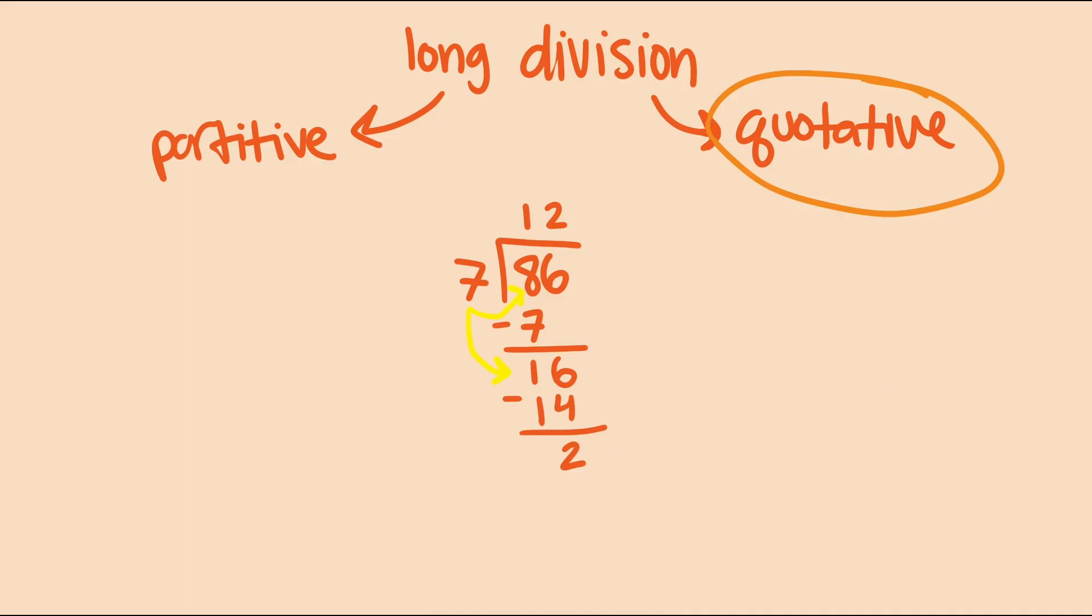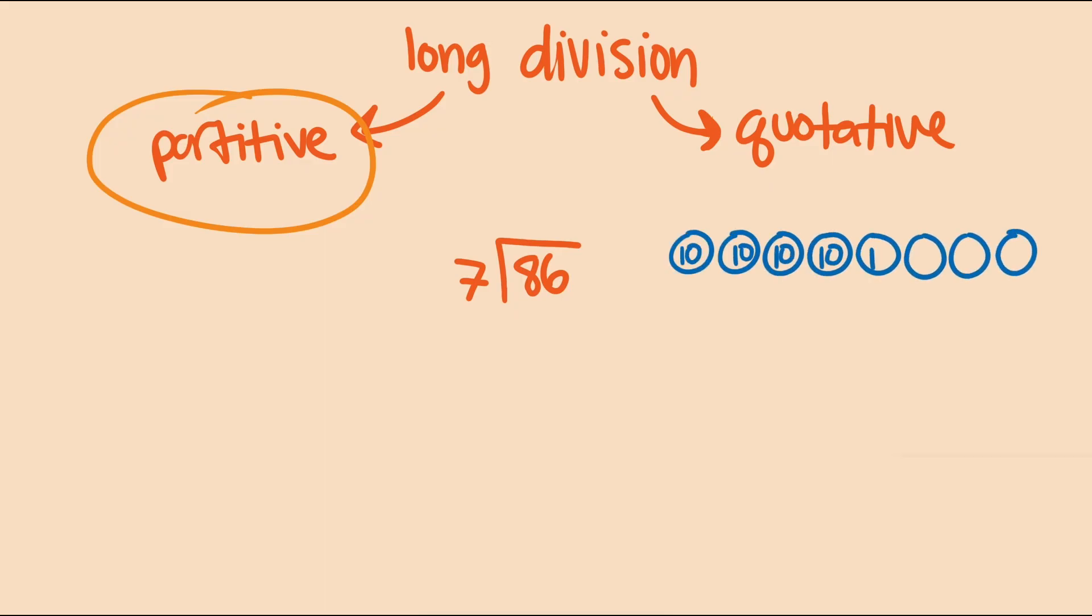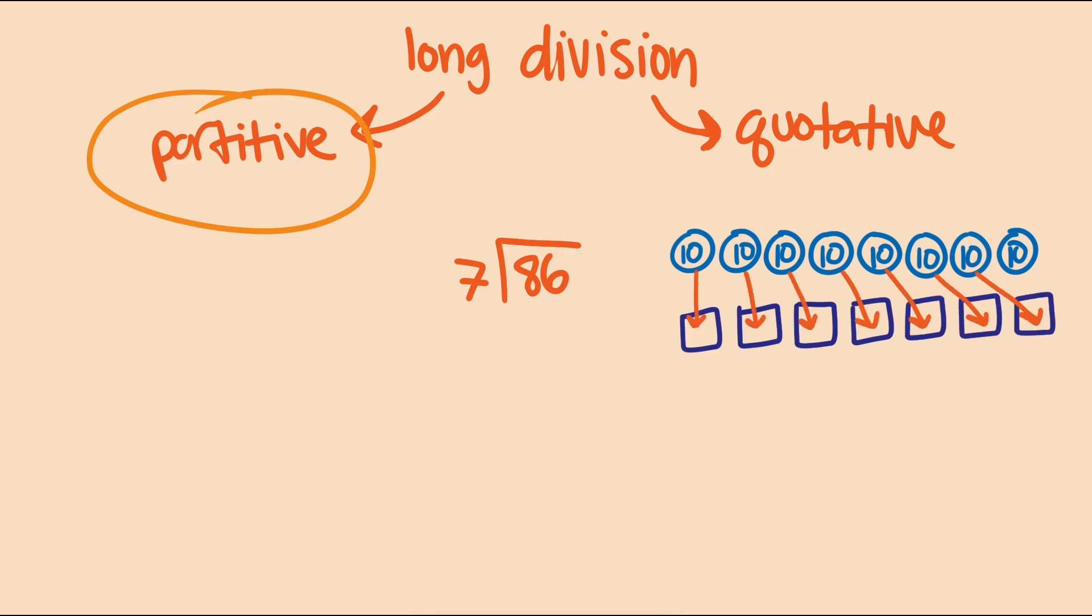But one problem with this traditional approach is it doesn't attend to place value very well. If we take a more partitive approach, the place value aspect of the numbers becomes more apparent. With partitive division, we'd instead ask, how can I distribute 8 tens evenly amongst 7 groups? Each group gets 1 ten with 1 remaining, so we can distribute 7 of the 8 tens. We put that here and subtract, and now ask,